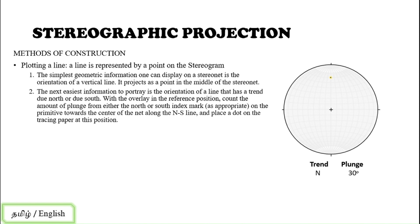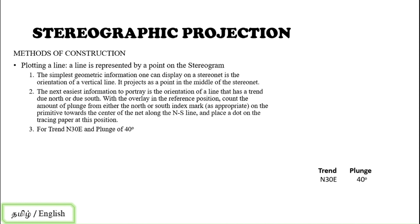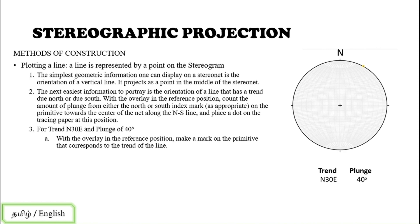Now for a more detailed example: plot a linear feature with trend N30°E and plunge 40°. Try this simultaneously on your own. First, take a tracing sheet and mark the north line. Step one: with the overlay in the reference position, mark a point on the primitive circle that corresponds to the trend of the line. The trend is N30°E — counting from north toward east: 0°, 10°, 20°, 30° — and mark that point on the primitive.